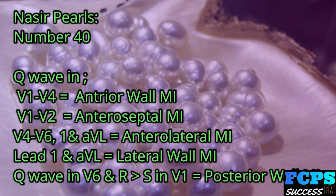Nasir Pearl number 40: Q wave in V1–V4 equals anterior wall MI. V1–V2 equals anteroseptal MI. V4–V6, lead I, and aVL equals anterolateral MI. Lead I and aVL equals lateral wall MI. Q wave in V6 and RS in V1 equals posterior wall MI.